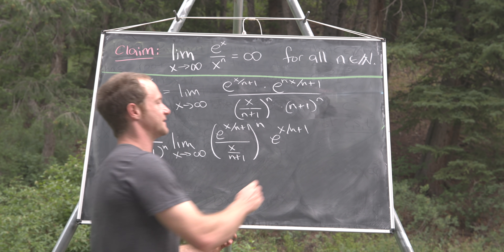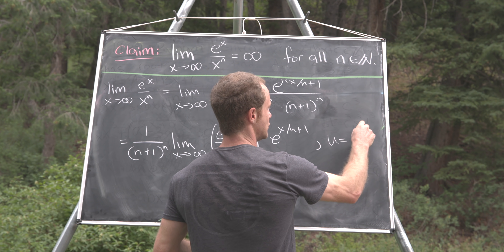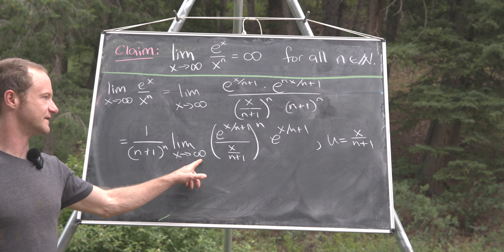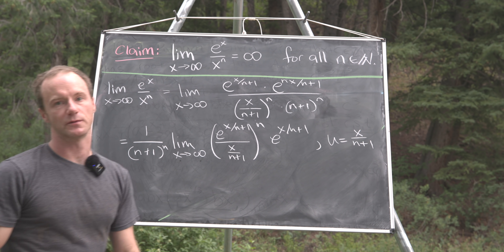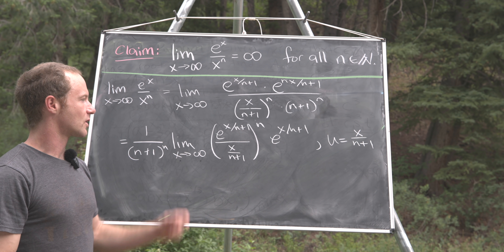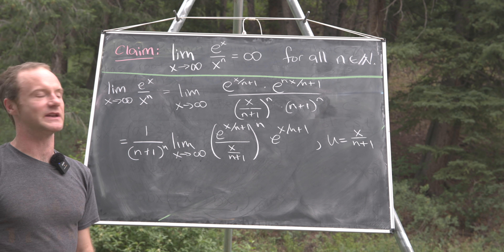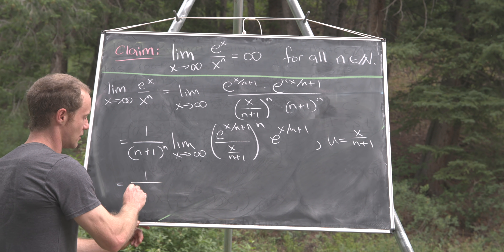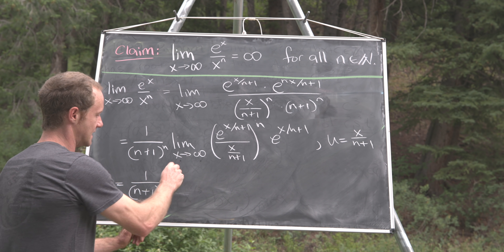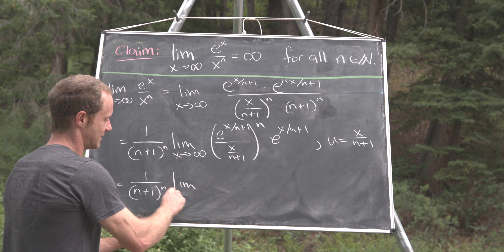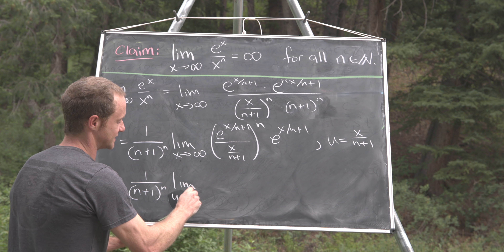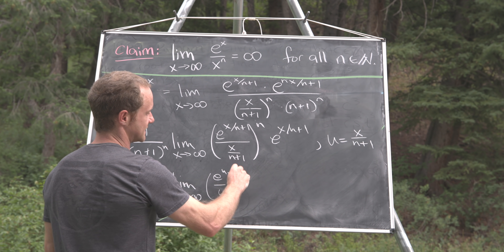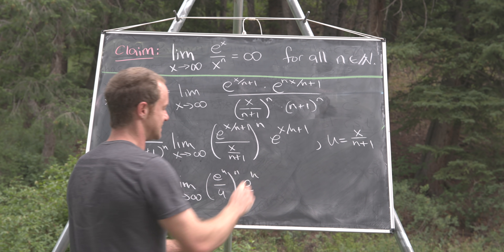Now I'm going to make a change of variables. Let u equal x over n plus 1. If x is approaching infinity, then u is also approaching infinity. You might be worried because n is an indeterminate, but it's not limiting — it's a constant with respect to the limit. That leaves us with 1 over n plus 1 to the n, times the limit as u approaches infinity of e to the u over u, all to the n, times e to the u.